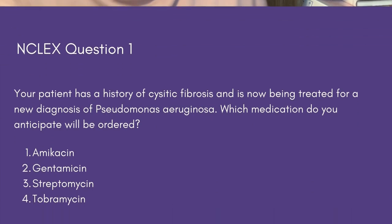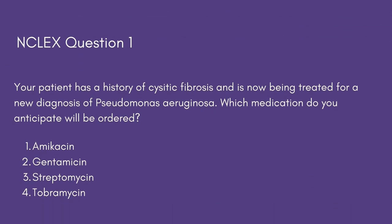NCLEX question one: Your patient has a history of cystic fibrosis and is now being treated for a new diagnosis of Pseudomonas aeruginosa. Which medication do you anticipate will be ordered — amikacin, gentamicin, streptomycin, or tobramycin? Pause and consider. The answer is tobramycin, which was a bonus piece of information included in the lesson.